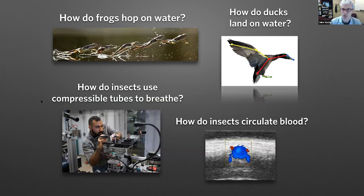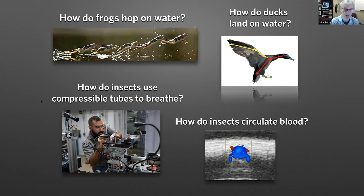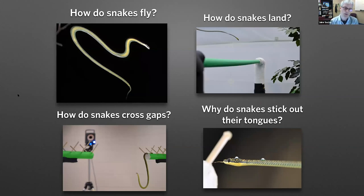Some of the questions we address in my lab: How do frogs hop on water? How do ducks land on water? How do insects use compressible tubes to breathe — they have tubes throughout their body and some of them squeeze them. How do insects circulate their blood? Insects are big squishy bags of fluid with an open circulatory system, meaning the blood is really not in vessels. And of course, we study snakes — how do they fly, land, and cross gaps? We also noticed they stick out their tongues at weird times and we're asking why.